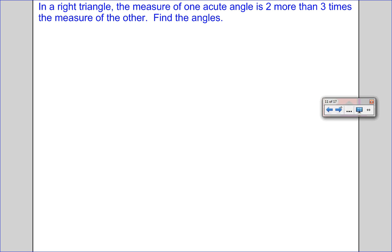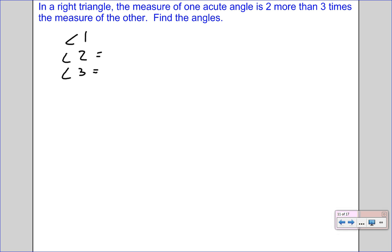And finally, on this triangle interior sum, let's do an algebraic one. In a right triangle, the measure of one acute angle is 2 more than 3 times the measure of the other. So, we've got three angles. Angle 1, angle 2, angle 3. Because it's a right triangle, we know the first angle has to be 90 degrees. The other one is going to be 3 times the other angle plus 2. So, we'll call the other angle x, so 3 times x plus 2. And that leaves the third angle as x, of course.